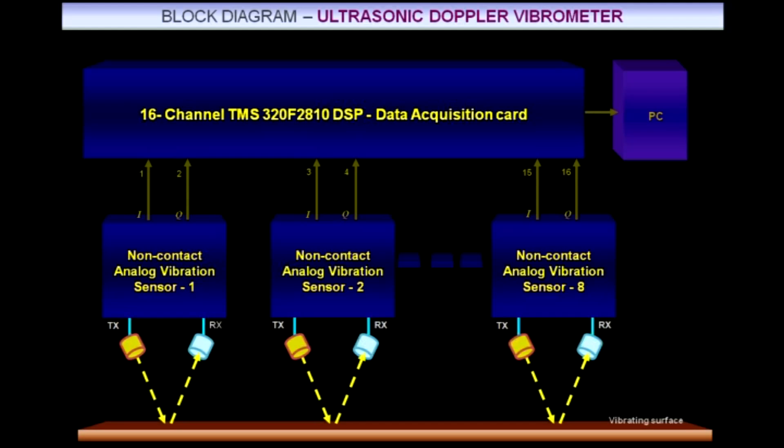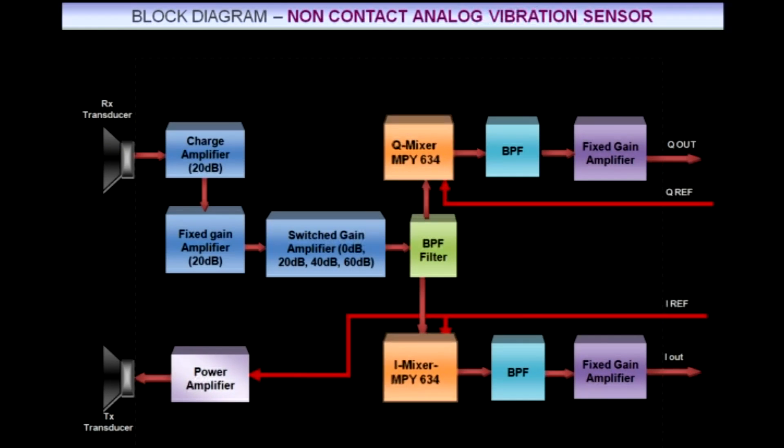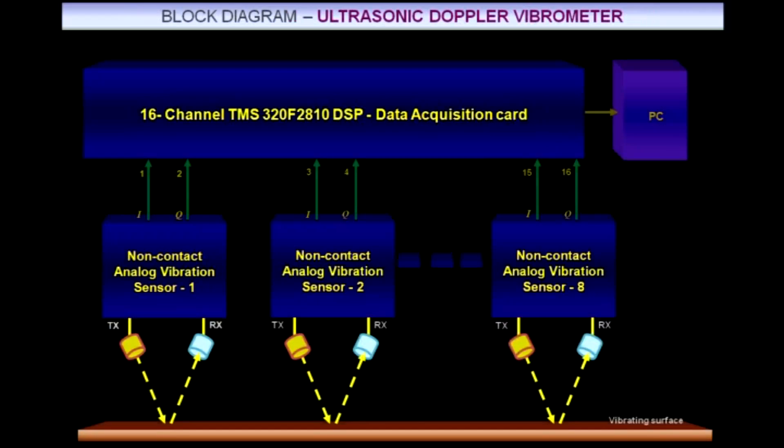The received ultrasonic wave modulated by the vibrating surface is processed in the non-contact analog vibration sensor card. TI's analog multiplier MPY634 is used as mixer circuit for conversion of modulated signal to baseband signal.